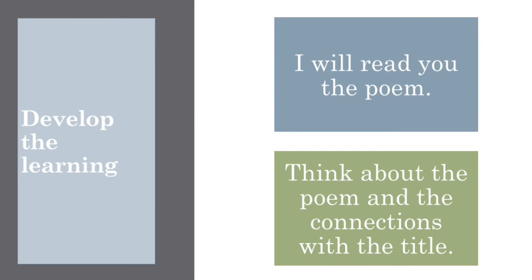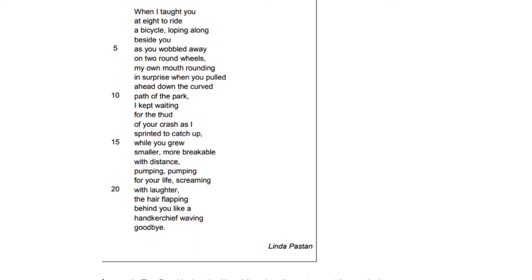I will now read the poem for you. Think about the poem's connections with the title and also the question: how does the poet present the speaker's feelings about her daughter? 'To a Daughter Leaving Home.' When I taught you at eight to ride a bicycle, lopping along beside you as you wobbled away on two round wheels, my own mouth rounding in surprise when you pulled ahead down the curved path of the park. I kept waiting for the thud of your crash as I sprinted to catch up. While you grew smaller, more breakable with distance, pumping, pumping for your life, screaming with laughter, the hair flapping behind you like a handkerchief waving goodbye.